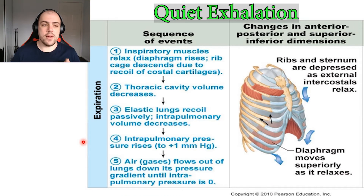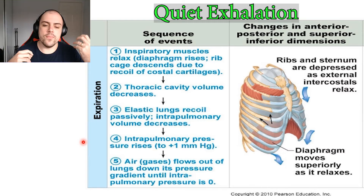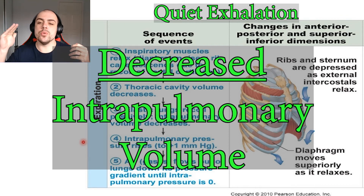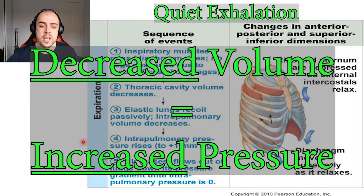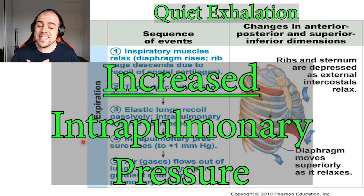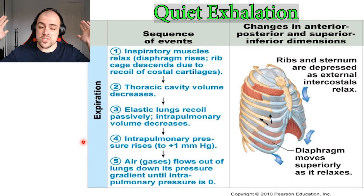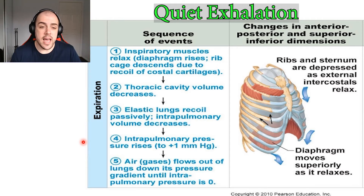Due to the diaphragm relaxing and our lung elasticity wanting to shrink, the volume of our lungs is going to decrease. Again, Boyle's law tells us that as volume decreases, pressure is going to increase, which means the air is at a higher pressure inside our lungs — the intrapulmonary pressure is higher than the surrounding air — so the air then moves out. And this is our quiet inhalation and exhalation.